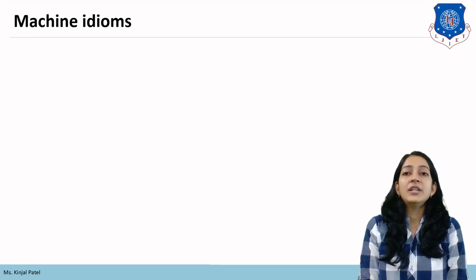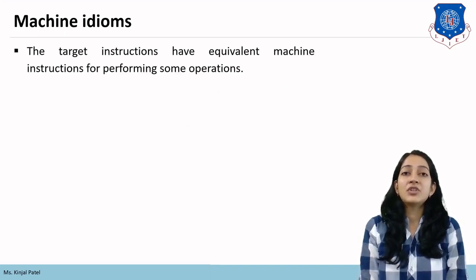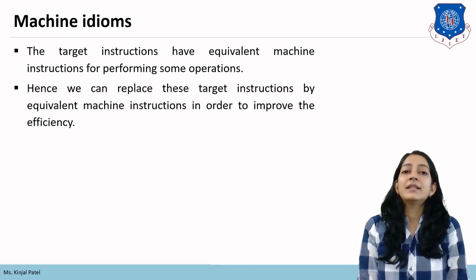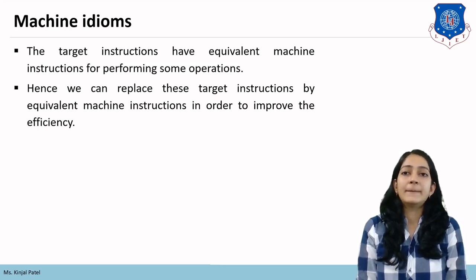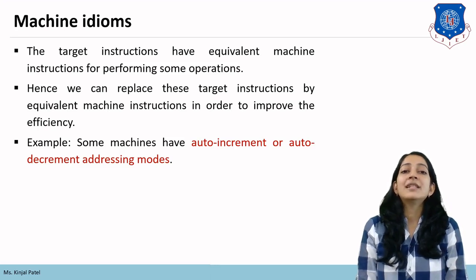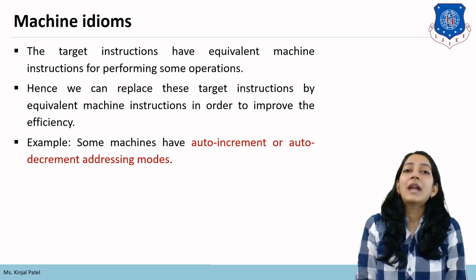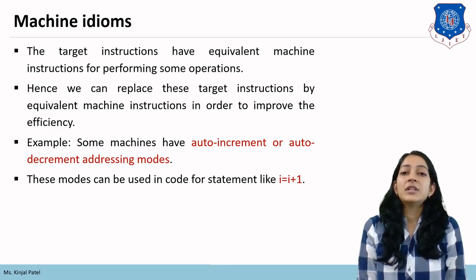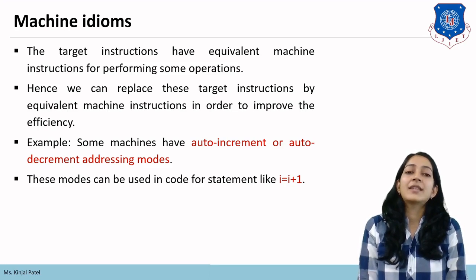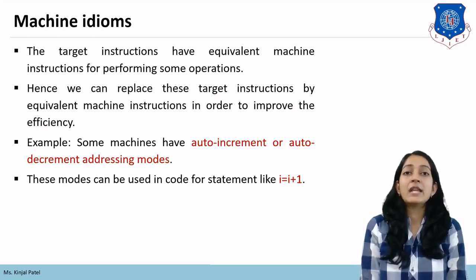The next technique is machine idioms. Target instructions have equivalent machine instructions for performing some expressions. We can replace target instructions by equivalent machine instructions to improve efficiency. For example, some machines have auto-increment and auto-decrement addressing modes. We need not write 'x = x + 1' or 'i = i + 1' explicitly; we can directly use auto-increment like i++ or auto-decrement like i-- instead of writing the full expression.